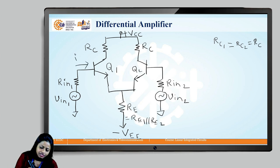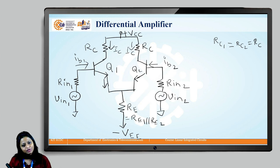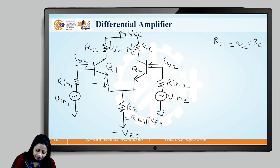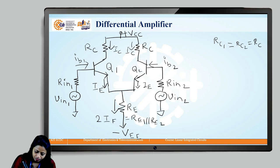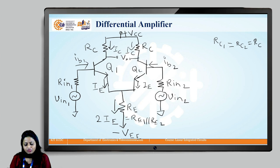The current entering at the base terminal is IB. The current flowing through the collector terminals is IC. At the emitter side, the current flowing through the emitter terminal of Q1 is IE, and that of Q2 is also IE. So the total current flowing through the resistor RE will be equal to IE plus IE, that is 2IE. The output voltage is measured across the collector terminals of the two transistors.